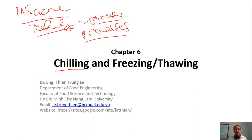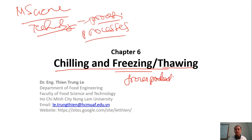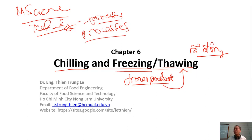Today we talk about chilling, freezing, and then thawing. When we do freezing and then frozen storage, we have frozen products or frozen ingredients. In freezing, you convert liquid water into frozen — into ice.